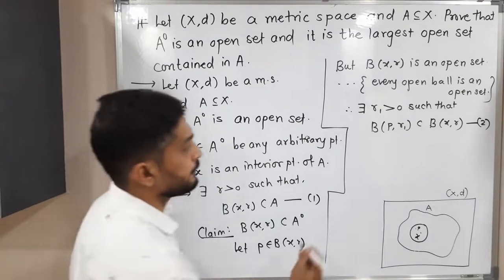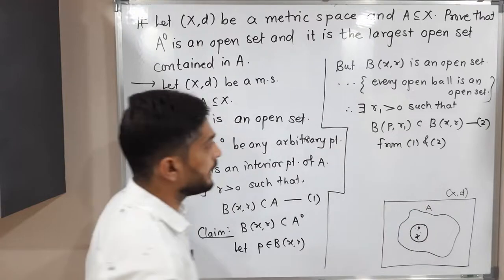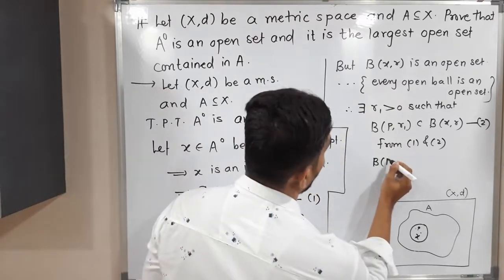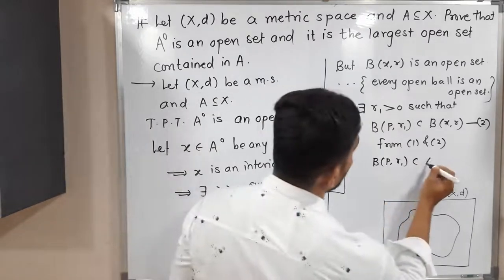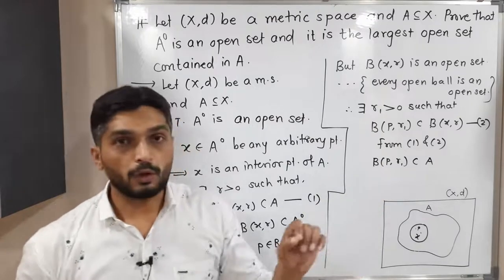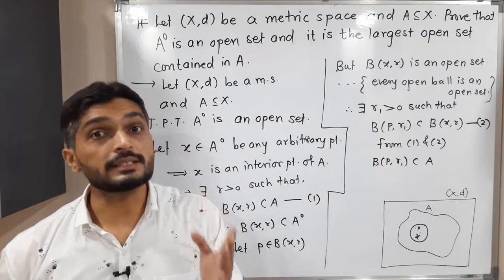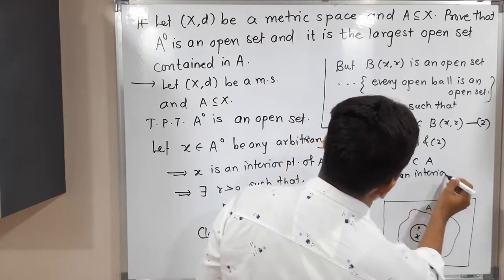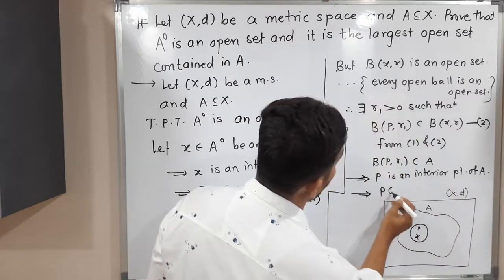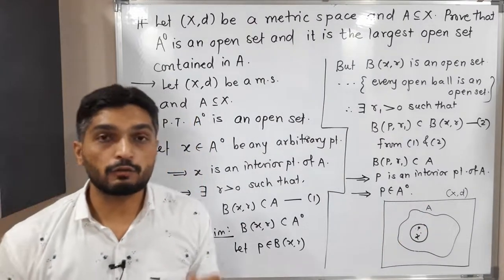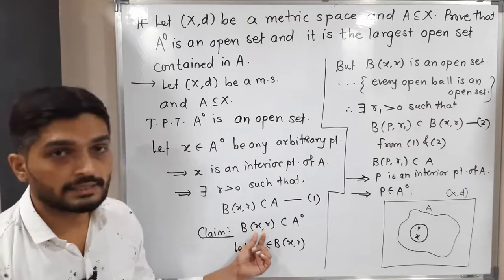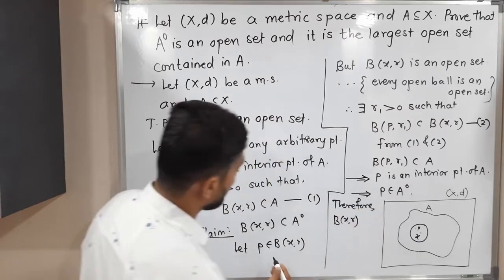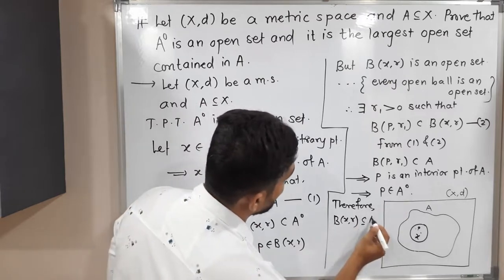So let us combine equations 1 and 2. If A ⊆ B and B ⊆ C, then A ⊆ C. We have B(p, r₁) ⊆ B(x, r) and B(x, r) ⊆ A, so B(p, r₁) ⊆ A. So the open ball around p is a subset of A, and therefore p is an interior point of A by definition of interior point. We can write symbolically: p belongs to A interior, since A interior is the collection of all interior points of A. We had taken p from B(x, r) and proved it is in A interior, so therefore B(x, r) ⊆ A interior.